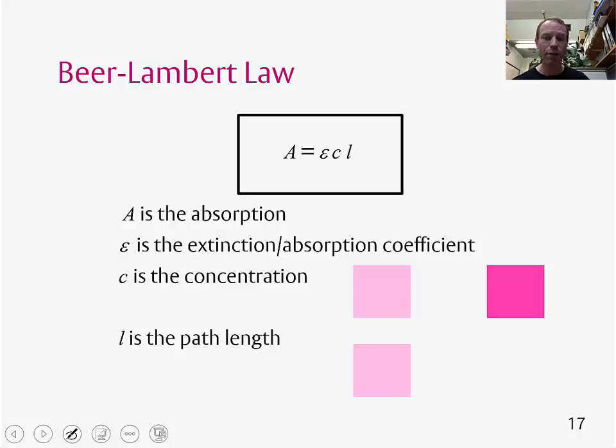If you think about the path length, if we've got a box of a certain length of a certain concentration, and then we double the path length, you can now imagine that twice as much light is going to be absorbed by this system. So this is another factor we need to think about when thinking about the absorption of light.